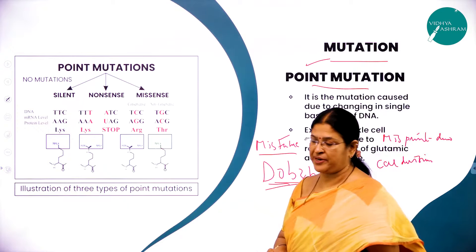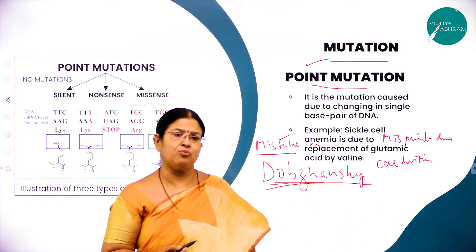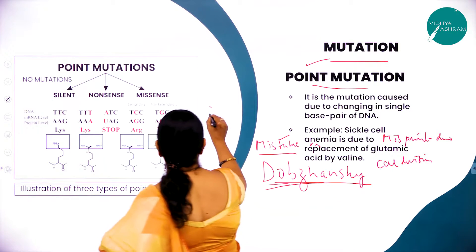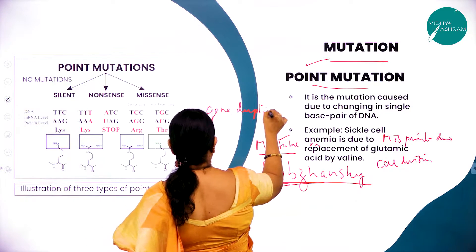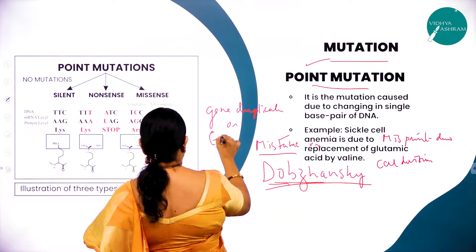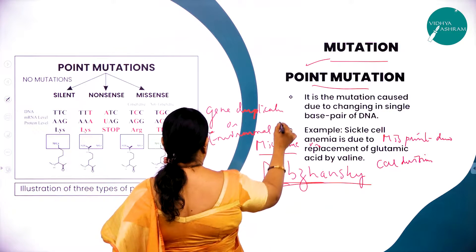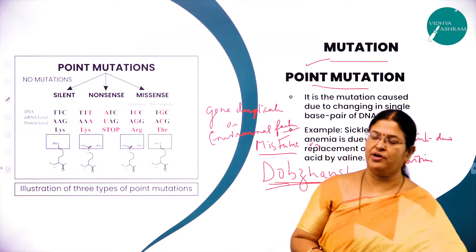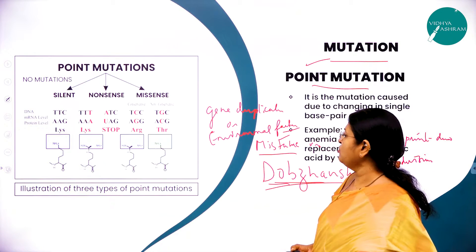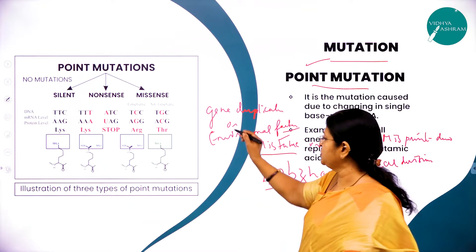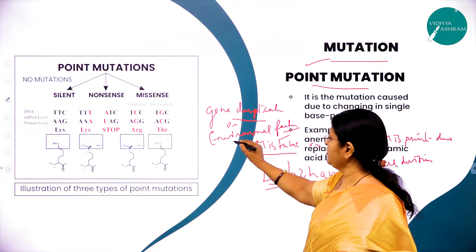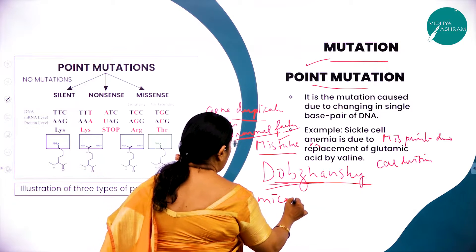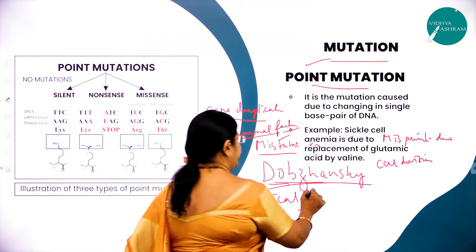What are the causes for mutation? Mutation may be caused due to errors in gene duplication, or it may be due to environmental factors such as chemicals or exposure to radiations.